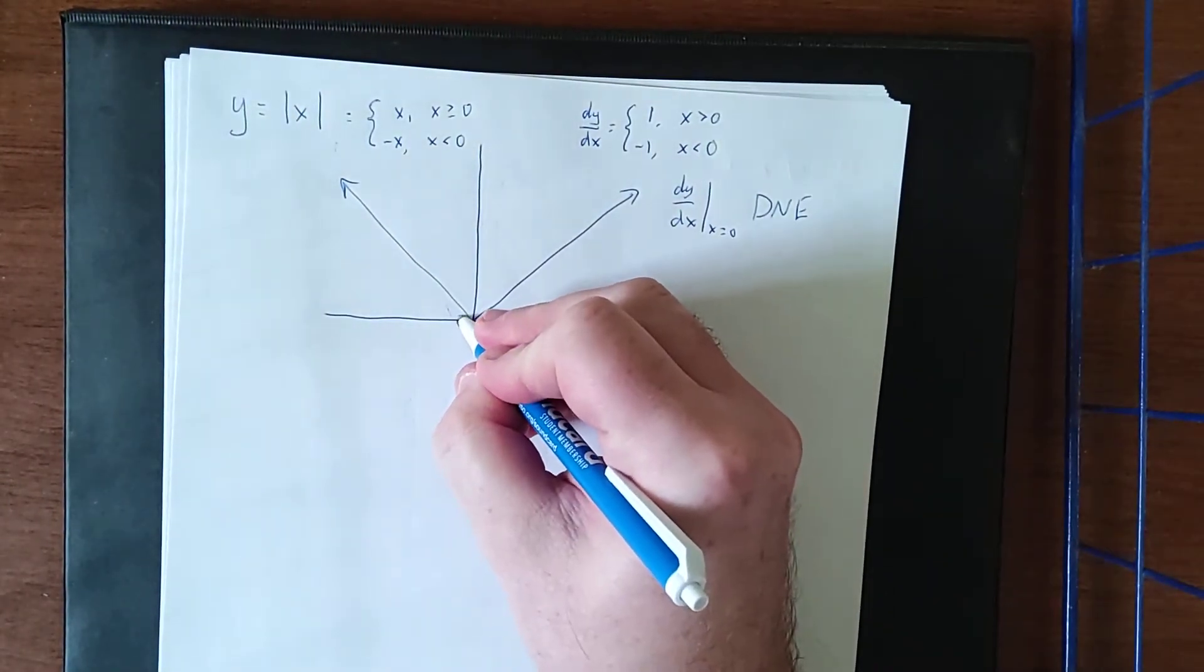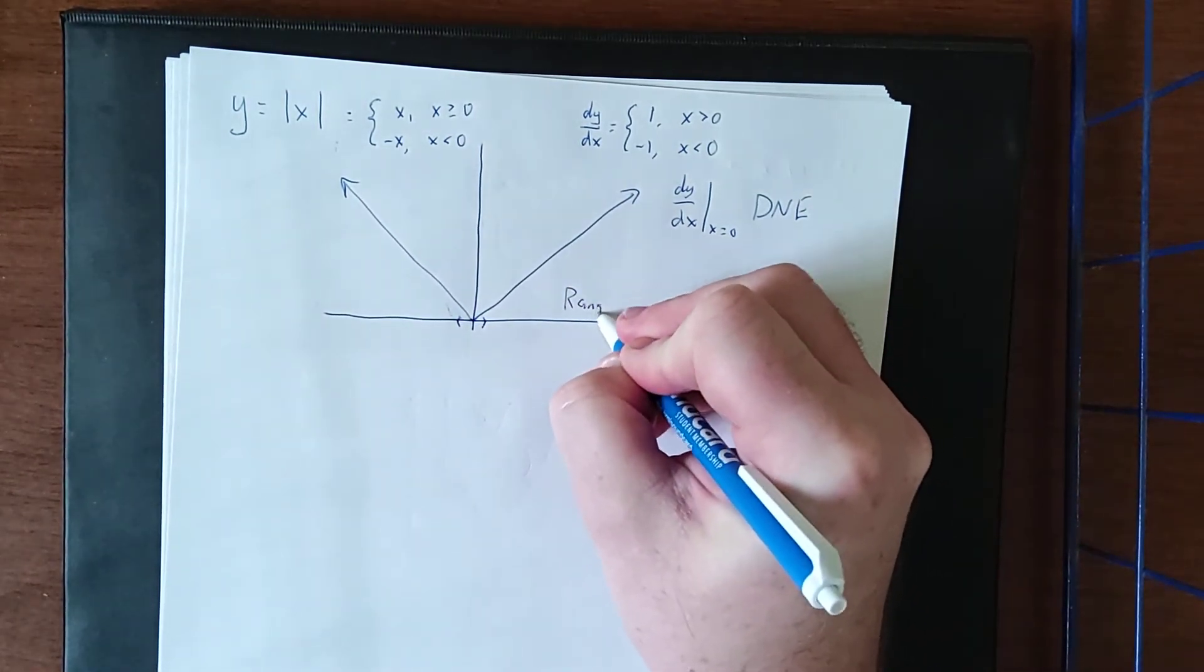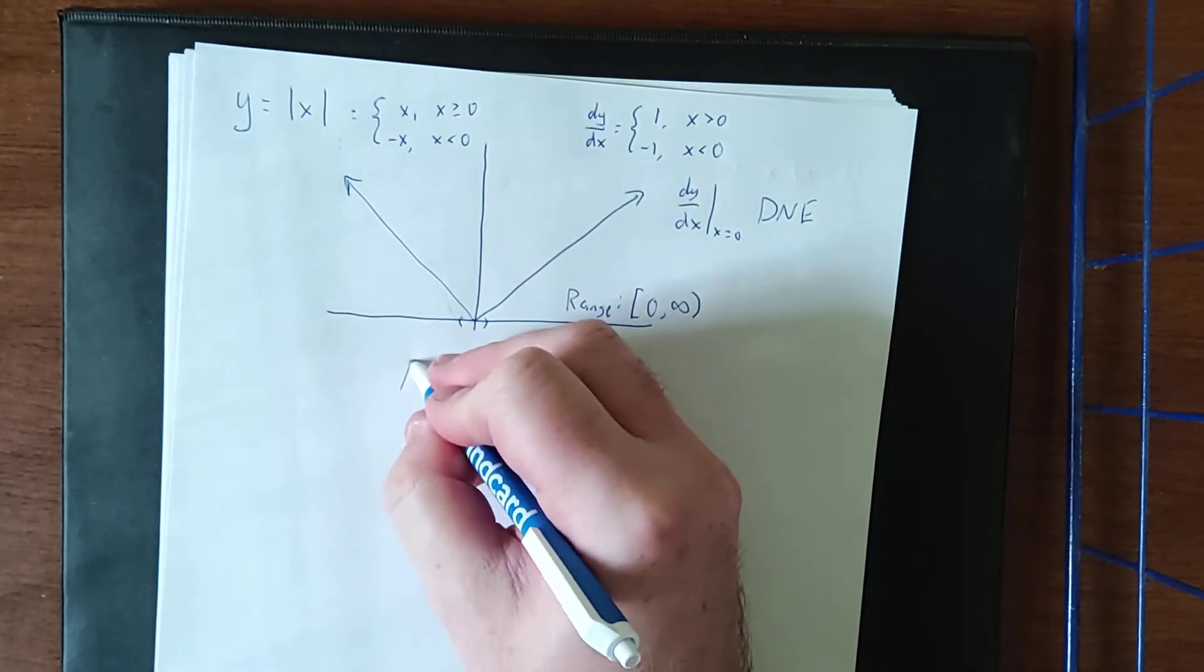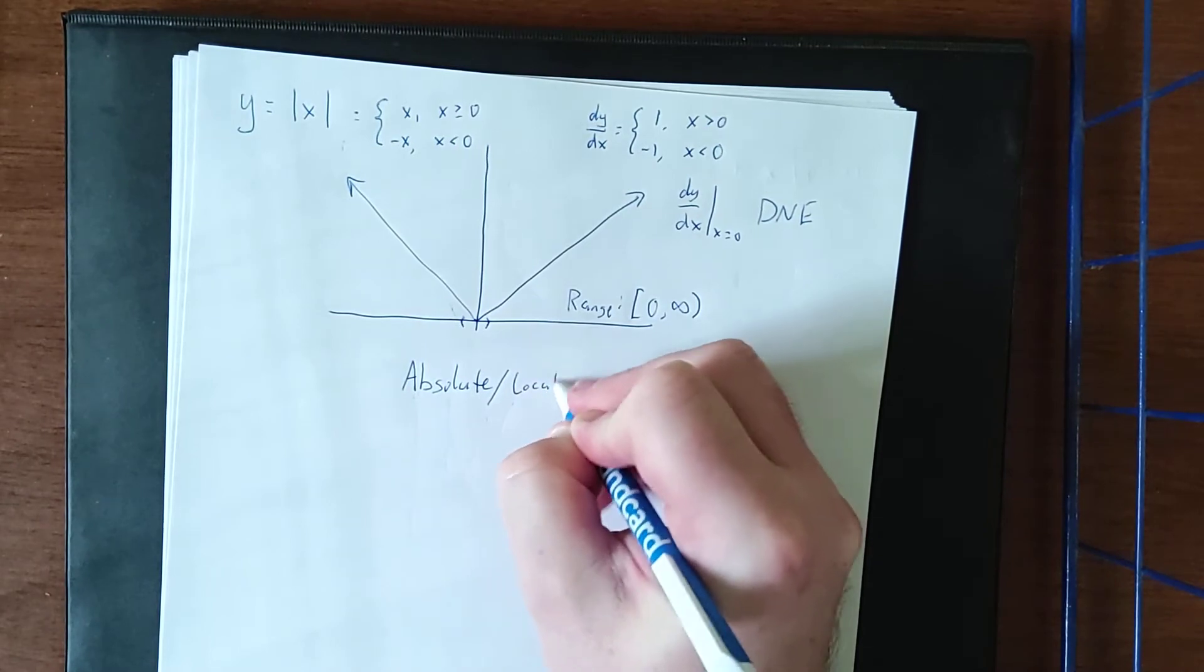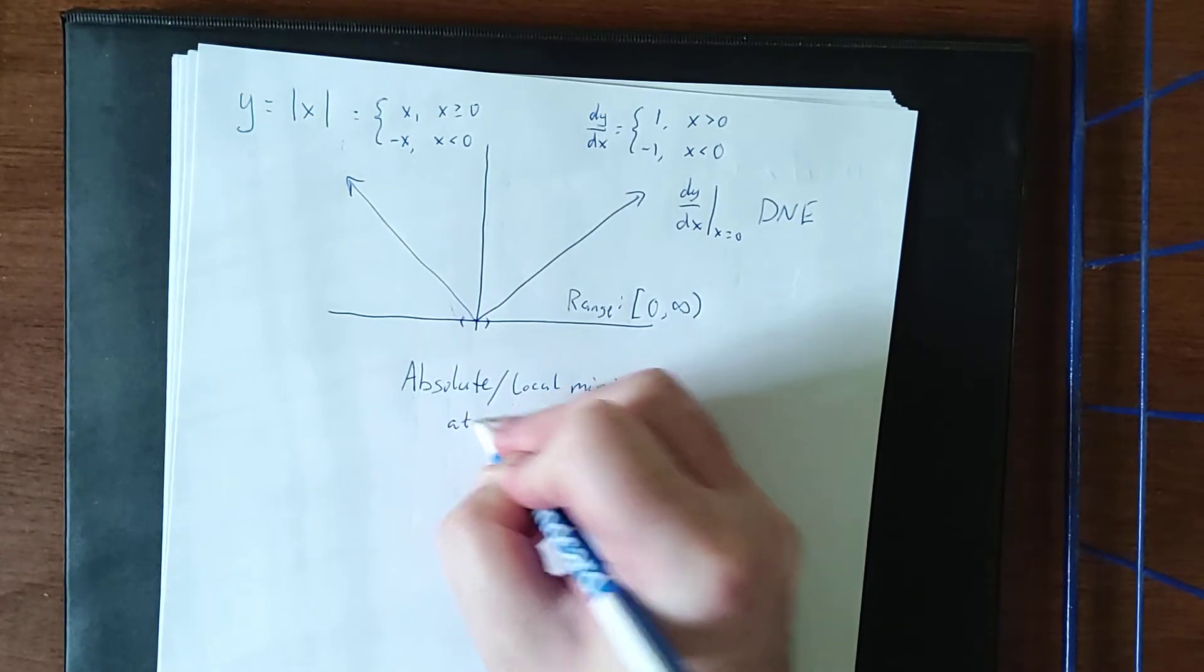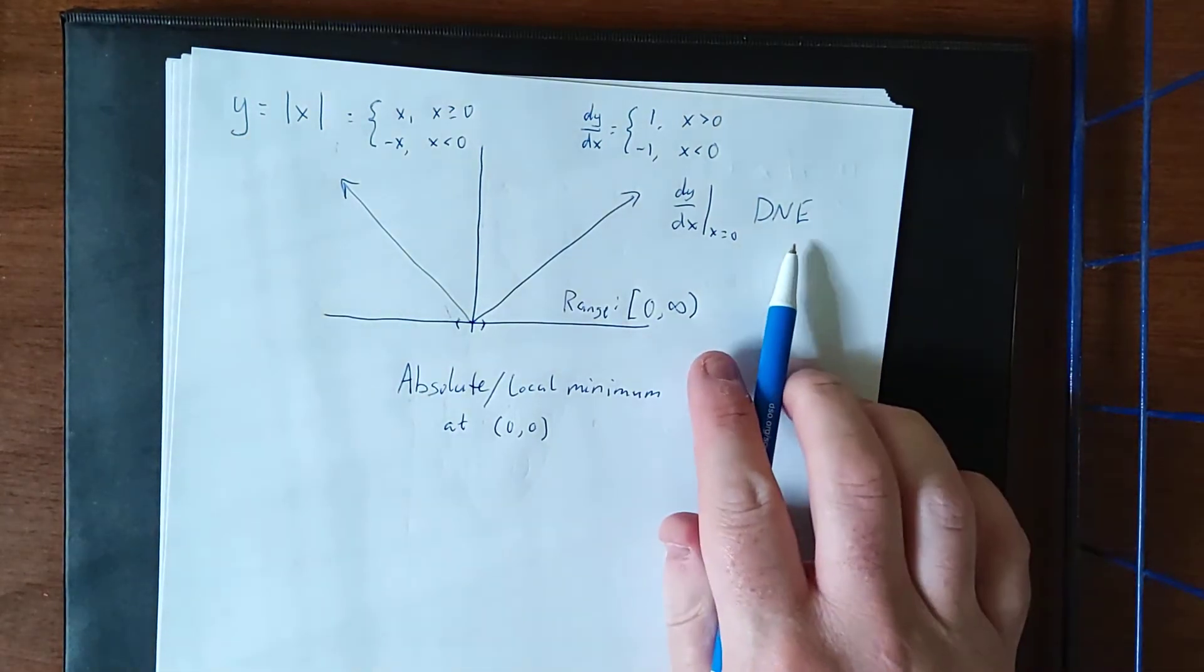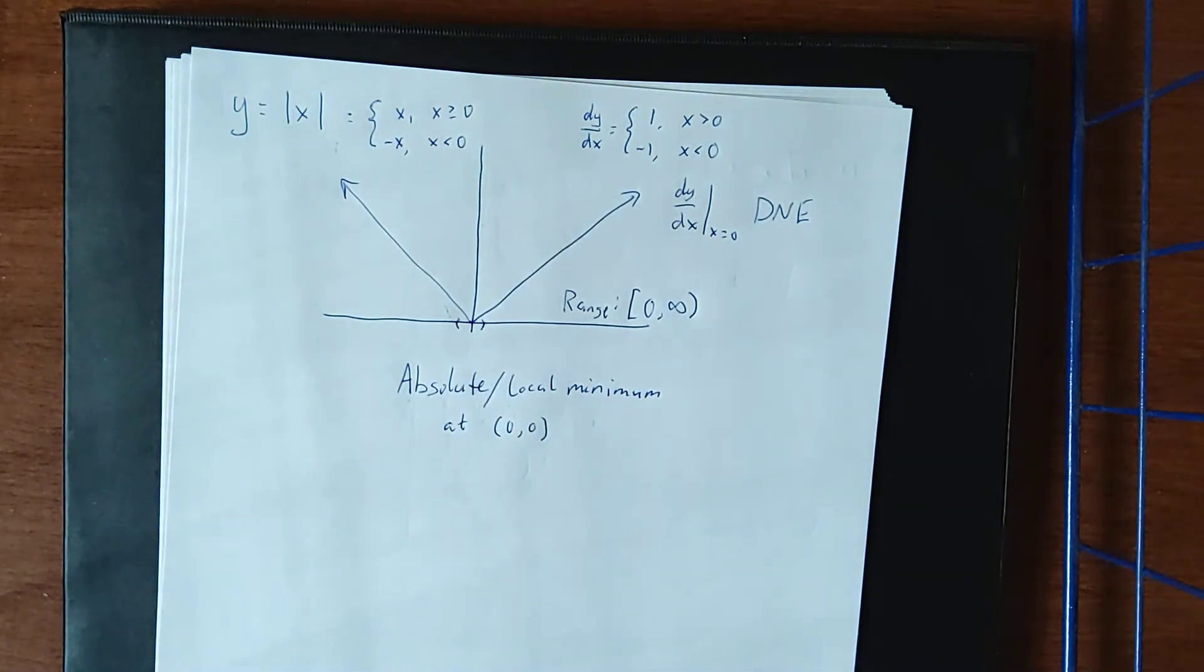However, we can still establish a little interval right around this point, and that is the lowest point on the graph, due to the fact that the range of the absolute value function goes from 0 to infinity. So it is possible for us to say that we have an absolute and local minimum that occurs at the ordered pair (0, 0). Nothing wrong with saying that in this case. However, it should be pointed out that the derivative does not exist at that point, despite the function being continuous at that point.